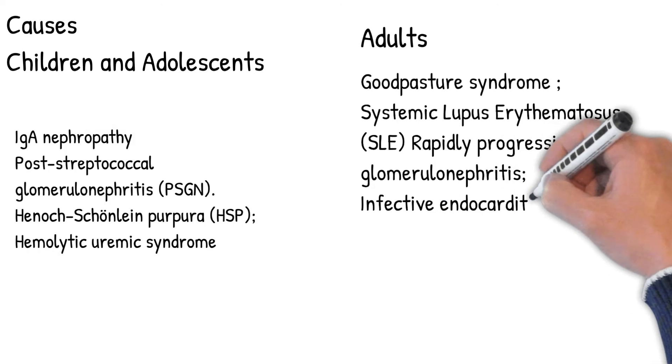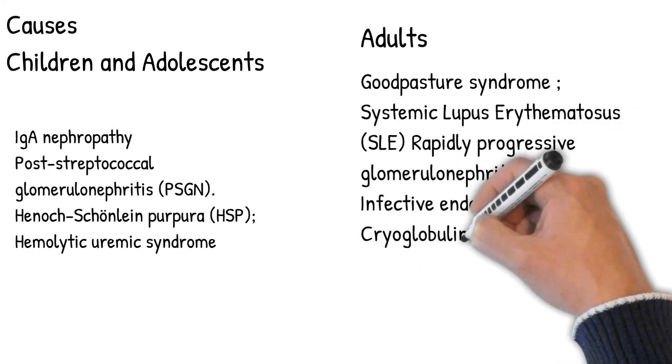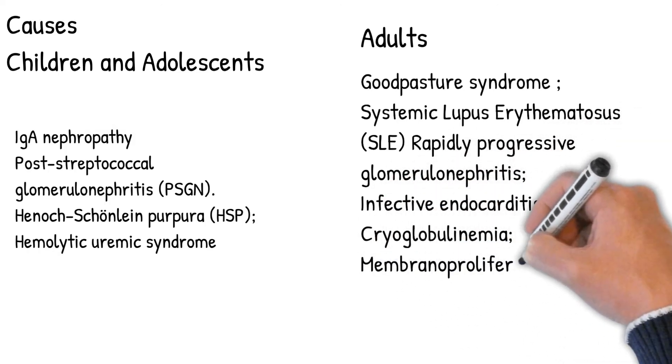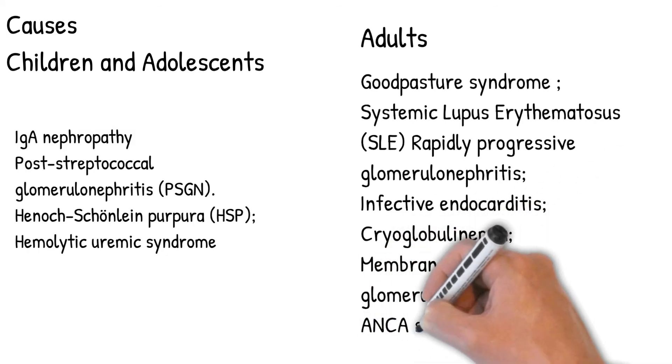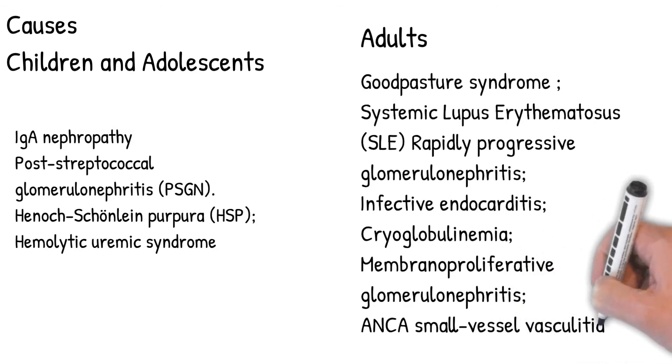Rapidly progressive glomerulonephritis, infective endocarditis, cryoglobulinemia (antibodies that are sensitive to the cold can become activated in cold), membranoproliferative glomerulonephritis, and other ANCA small vessel vasculitides.